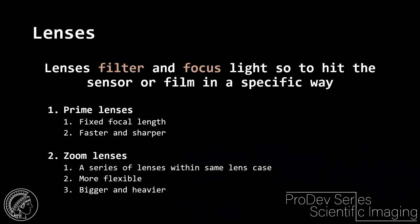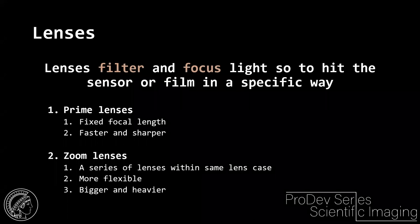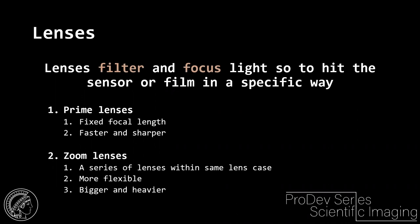The most important thing when photographing artifacts is the lens. A lens filters and focuses light so it hits the sensor or film in a specific way. There are two types: prime lenses, which are fixed and cannot change focal length — much faster and sharper — and zoom lenses, which are flexible, bigger, and heavier, but allow zooming through various focal lengths. Zoom lenses are most commonly used since artifacts come in different sizes.